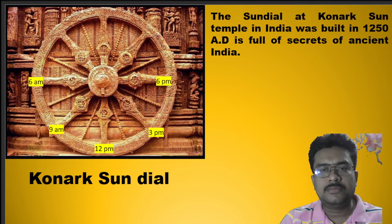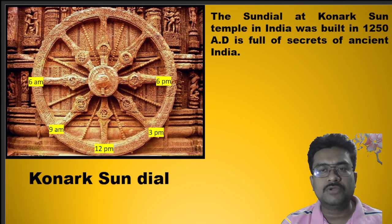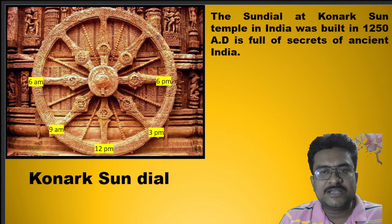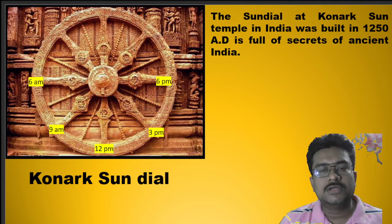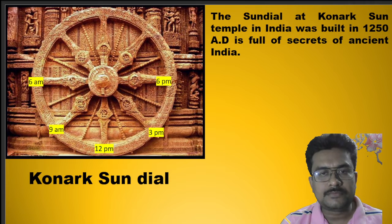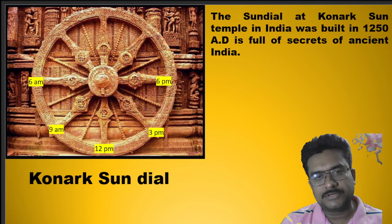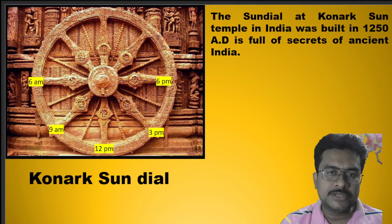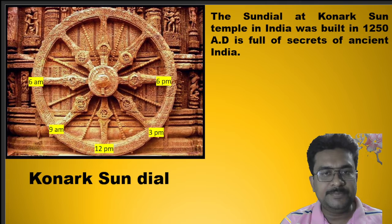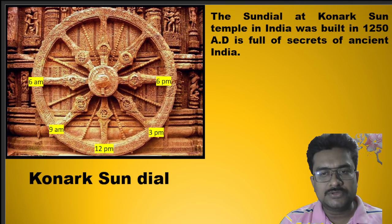This sundial is called the Konark sundial, from the Konark Sun Temple in India, built around 1250 AD. It is full of secrets of ancient India. It has eight spokes which divide the 24 hours into equal three-hour segments. Between two major spokes there is a minor spoke, so the time separation between a minor and major spoke is about 90 minutes. Between a major and minor spoke there are 30 divisions, so 90 minutes is divided equally into three-minute intervals. Using this instrument one can measure time accurately to the minute.